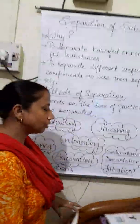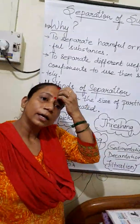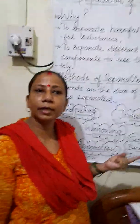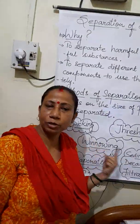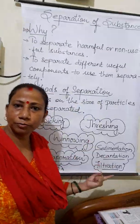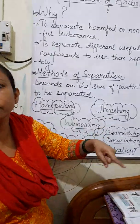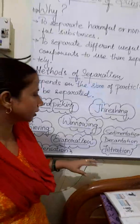In that chapter you must have learnt that one material can be used to make different objects, and different objects are made up of different types of material.